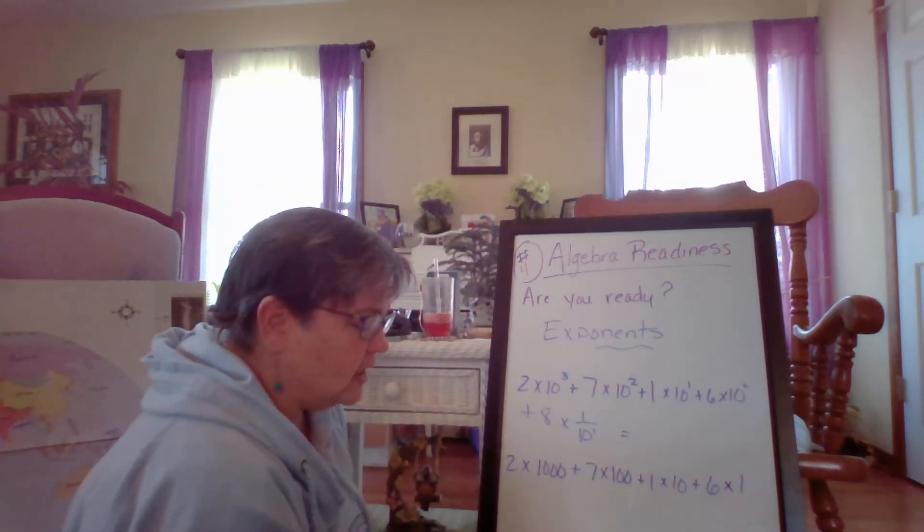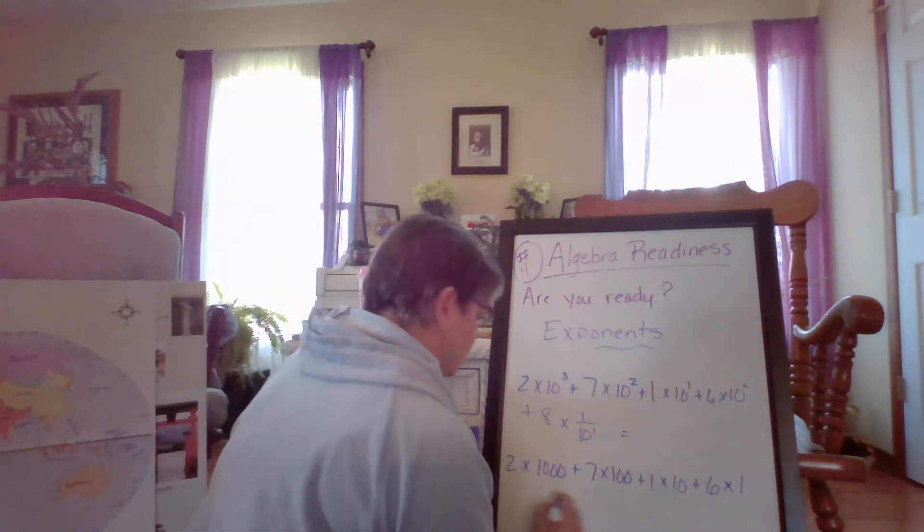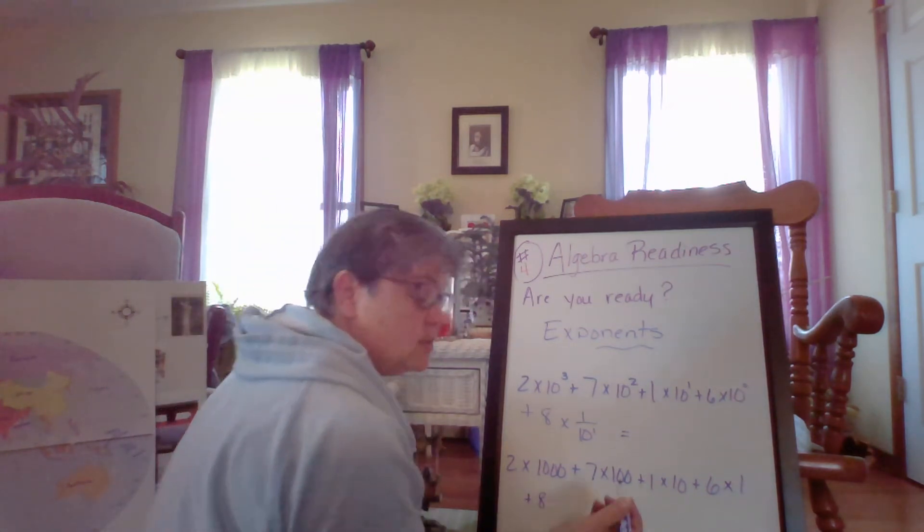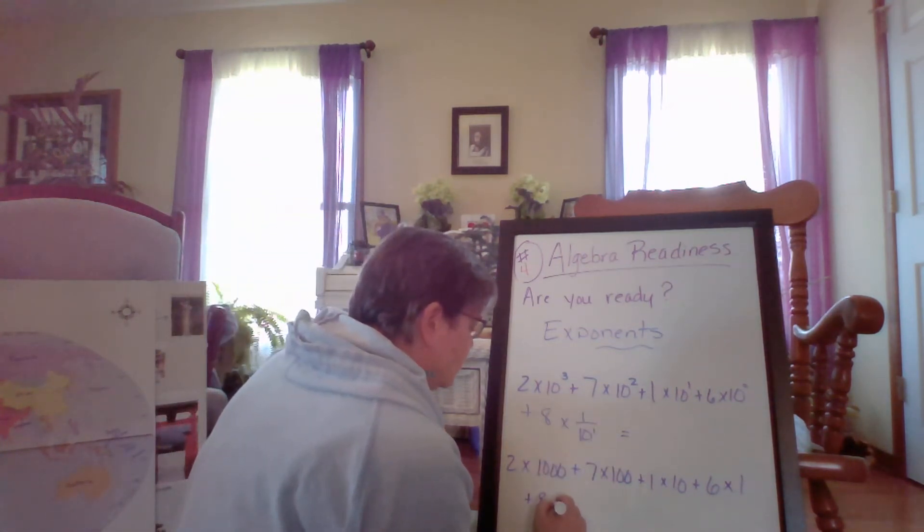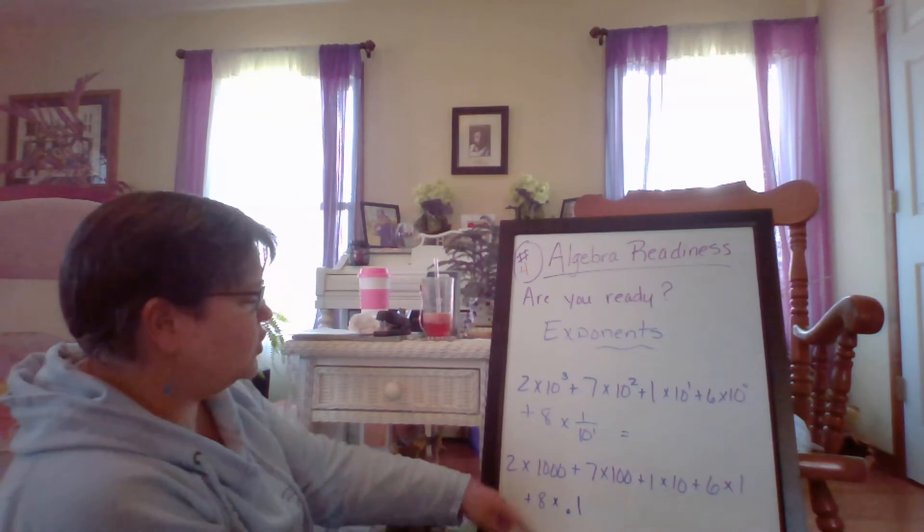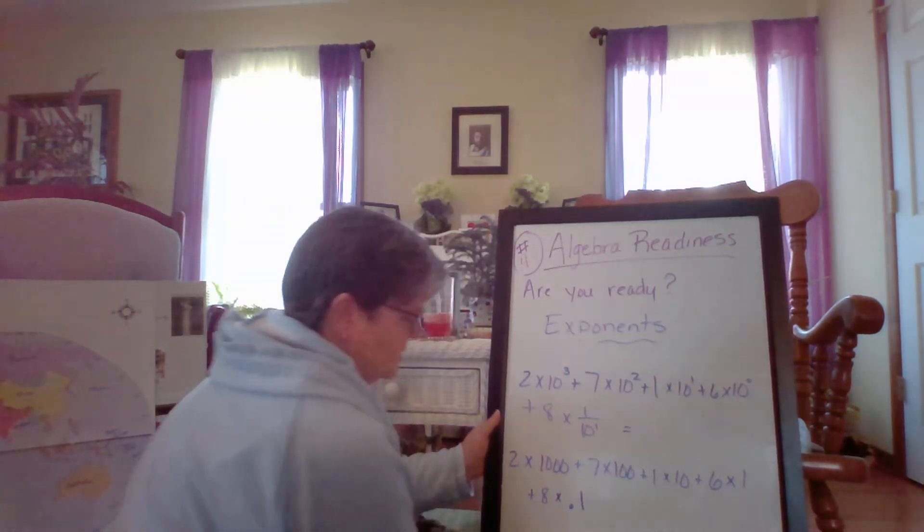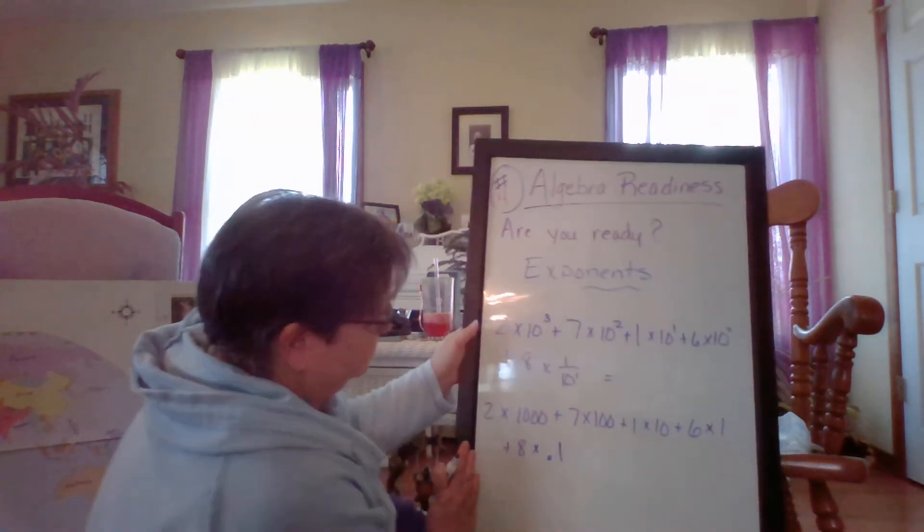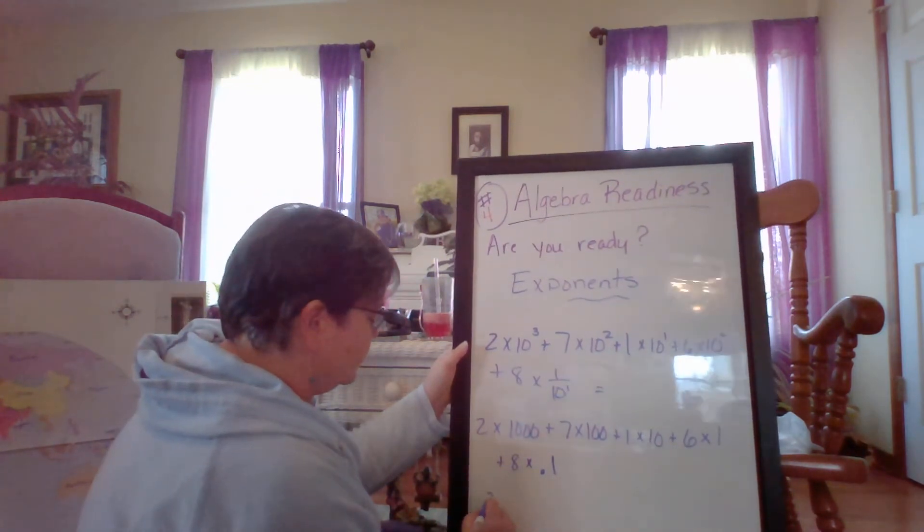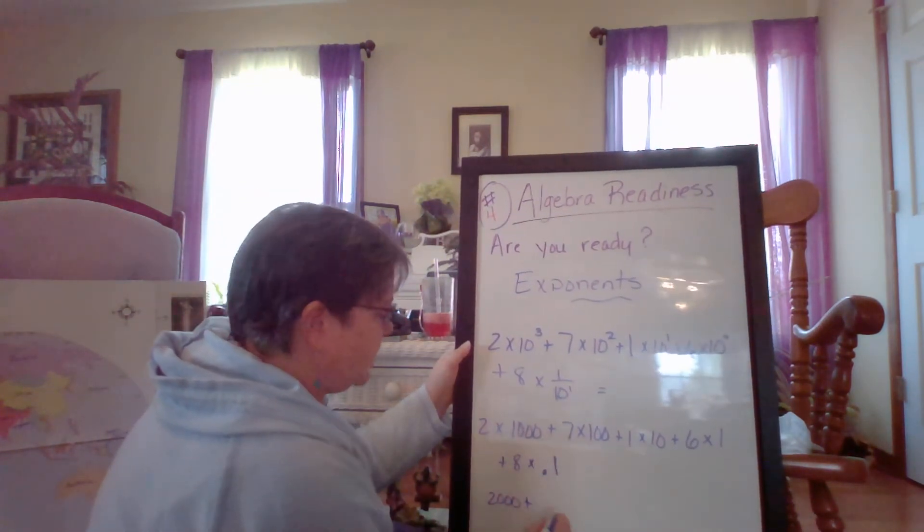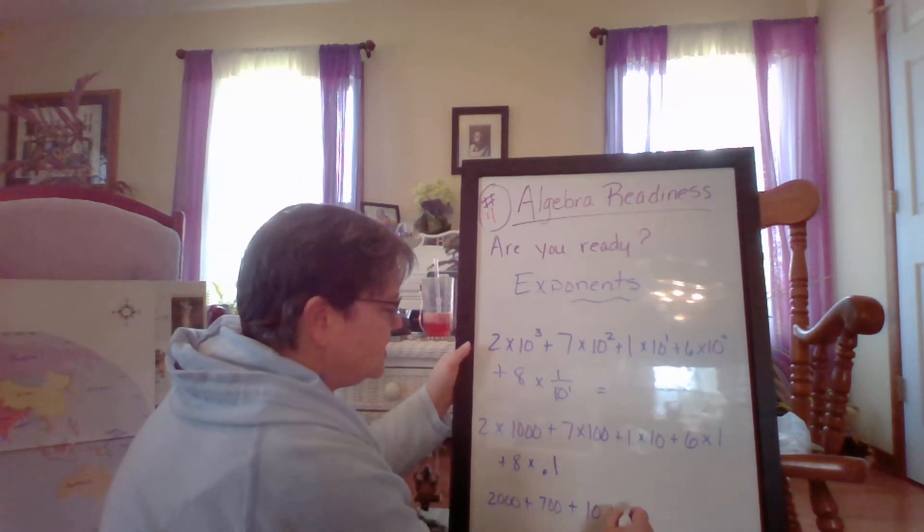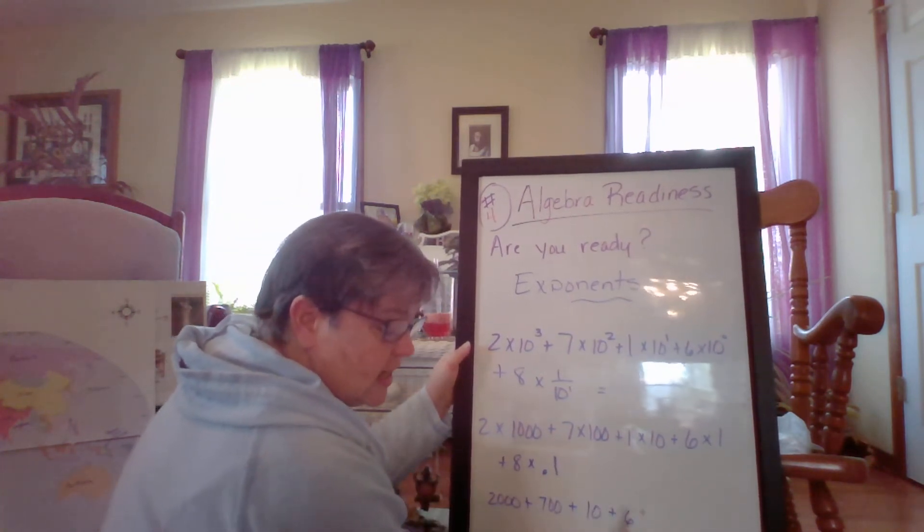And then finally, plus eight times one-tenth, which is, how do we write one-tenth? Point one. All righty. So two, I hope you can still see this. Do we have some more room you can see down here? Two times a thousand is two thousand. Seven times a hundred is seven hundred. One times ten is ten. Six times one is six. And eight times one-tenth is eight-tenths.